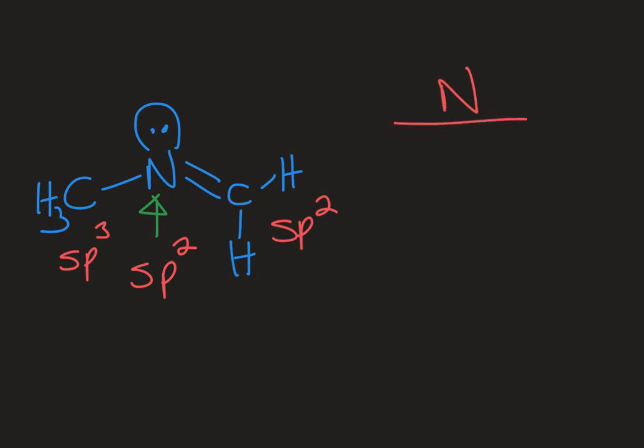So let's look at the different types of bonds we observe here. That nitrogen has two sigma bonds. So we can say sigma from the nitrogen, which is sp2 hybridized, to the carbon on the left, which is sp3 hybridized. That's one sigma bond. It has another sigma bond from the nitrogen, which is sp2 hybridized, to the carbon on the right, which is sp2 hybridized also.